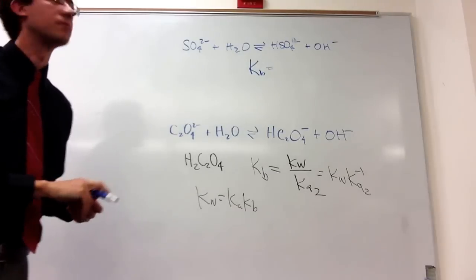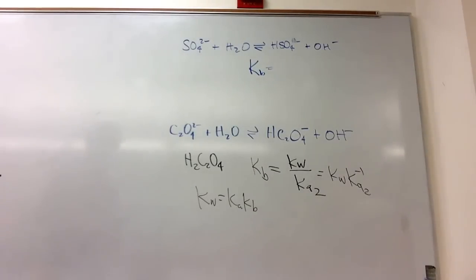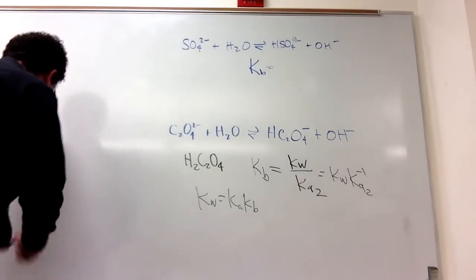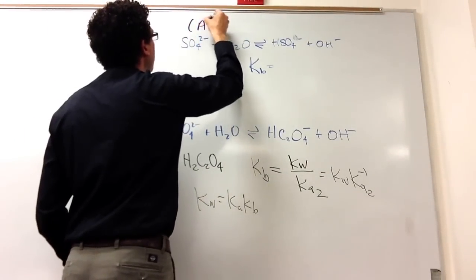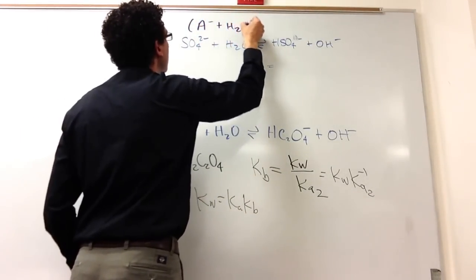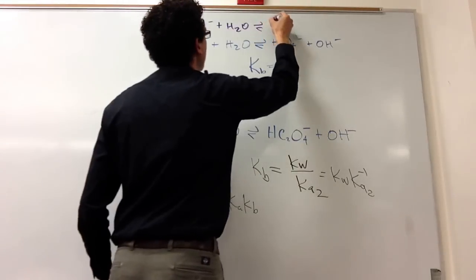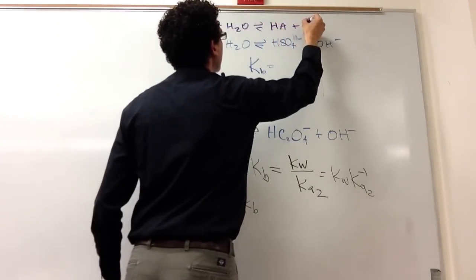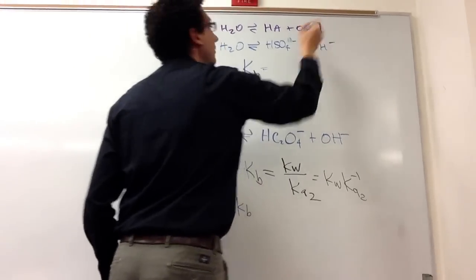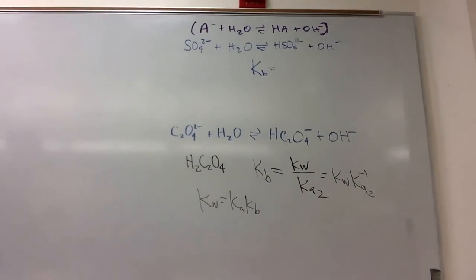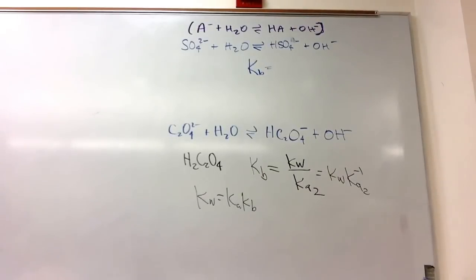Wait, how do you know that it's KB? Is it plus water? Yeah, the general reaction for a base, I'll put it up here, is A minus plus water goes to AH plus OH minus. So you need to know, be really familiar with the general reaction of an acid and base. This is a general reaction for a base, so it's a KB something.